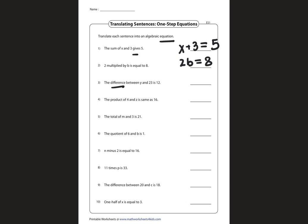The difference, which indicates subtraction, between y and 23 is 12. So 23 is mentioned second. So we do y minus 23 is equal to 12.